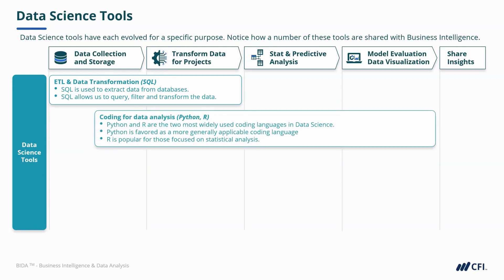Next we have coding for data analysis, and for this we typically use Python or R. These are the two most widely used coding languages in data science. Python tends to be favoured as a more generally applicable coding language, but R is popular for those focused on statistical analyses.